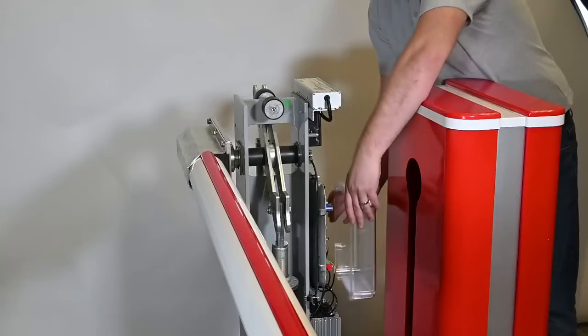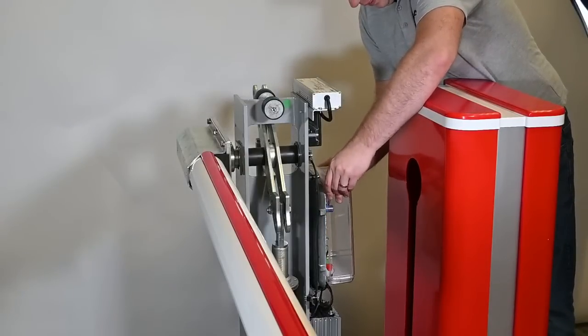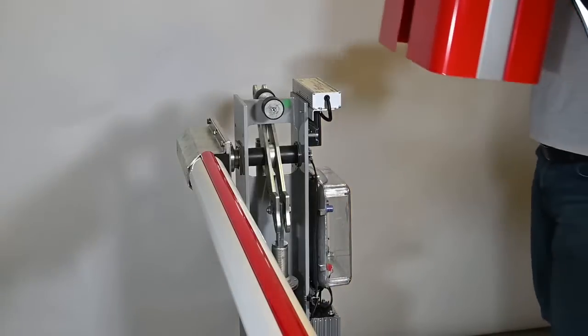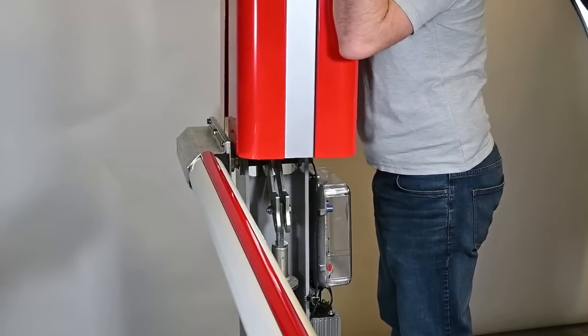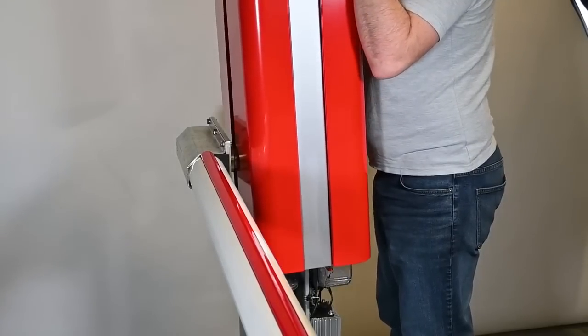Before putting the housing on we always recommend to fit the plastic cover over the board. The housing drops down over the top and that spacer ring we put on to start with also helps guide the barrier down.